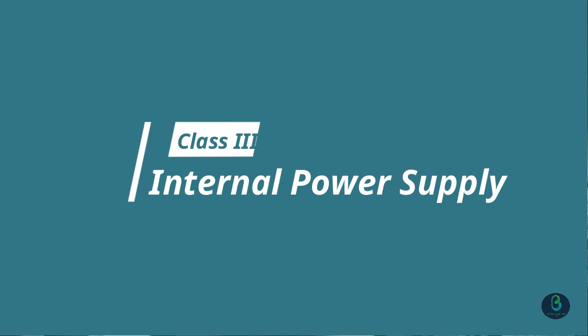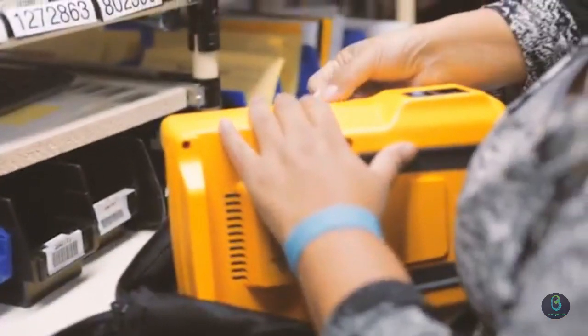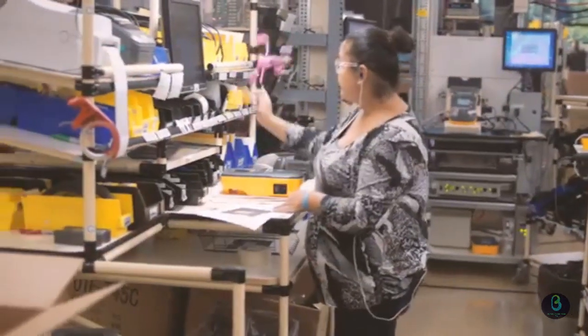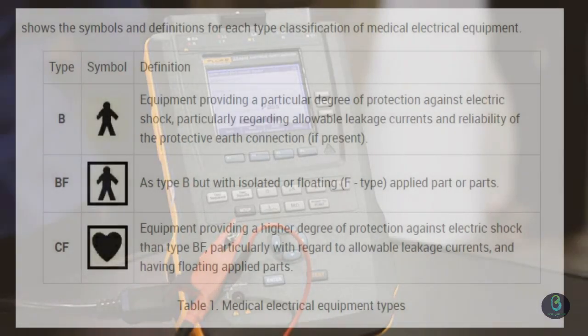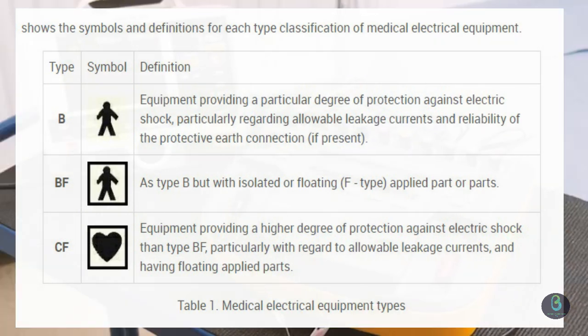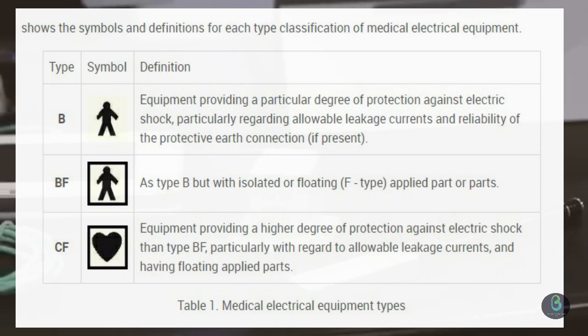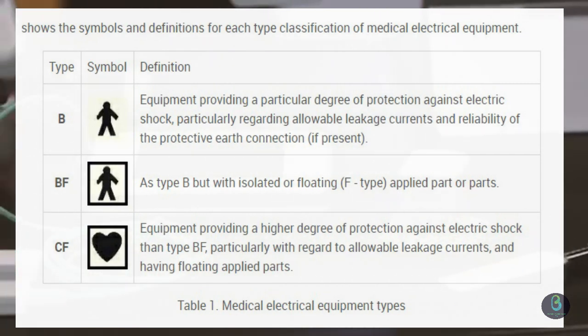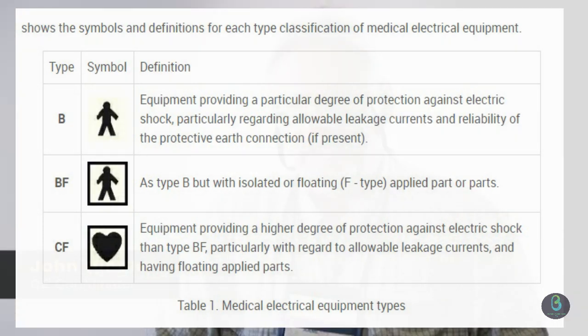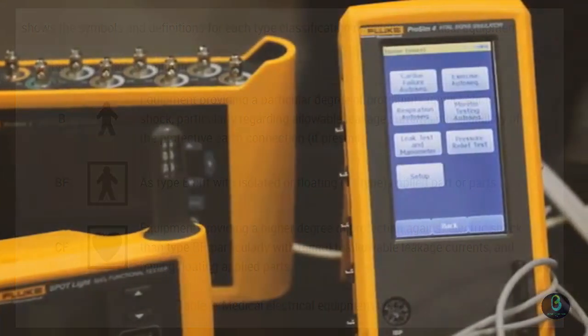Second, each patient applied part or patient lead has a type. Type B: patient applied part earthed. Type BF: patient applied part floating surface conductor. Type CF: patient applied part floating for use in direct contact with the heart.